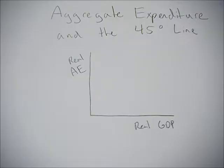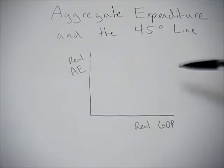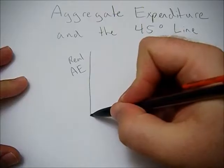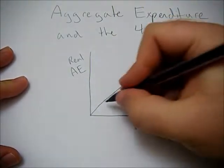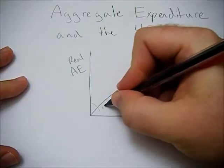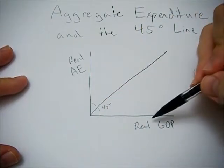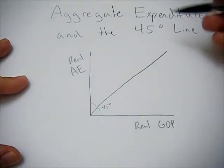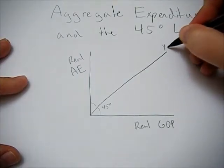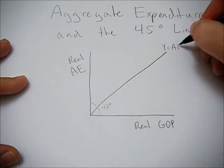This video is going to go over the aggregate expenditure line in reference to the 45-degree line on the graph with real GDP and real aggregate expenditure. When you draw the 45-degree line, it's just going to be a line at 45 degrees, and it shows you at every point where real aggregate expenditure equals real GDP. We're going to label that as Y equals AE.